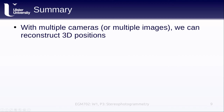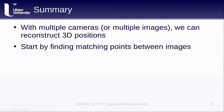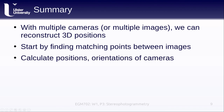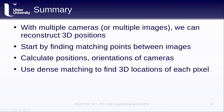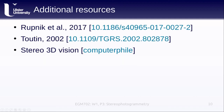To summarize: with multiple cameras or images we can reconstruct 3D positions. We start by finding matching tie points between images, use them to calculate camera positions and orientations, and if we have control points we can find absolute orientation. Otherwise we can use relative orientation scaled to the image geometry. With camera orientations established, dense matching lets us find the 3D locations of each pixel, giving us the 3D locations of whatever we're looking at.